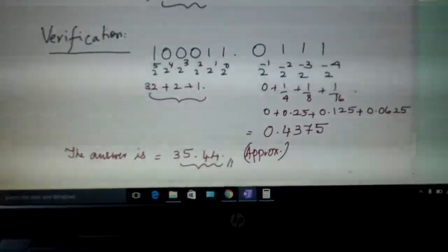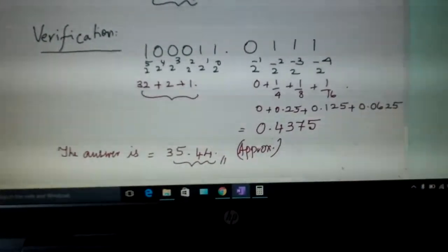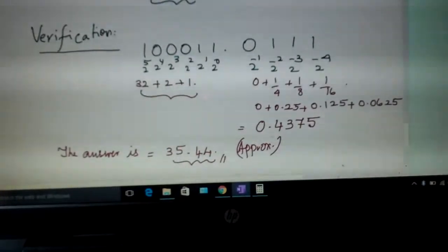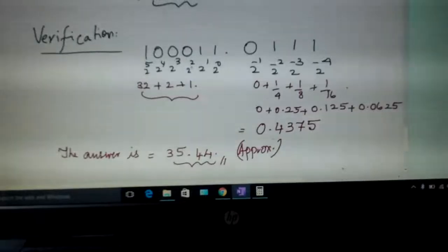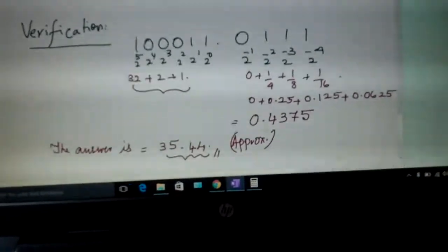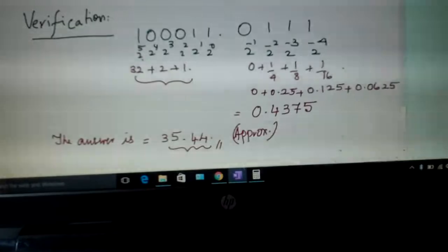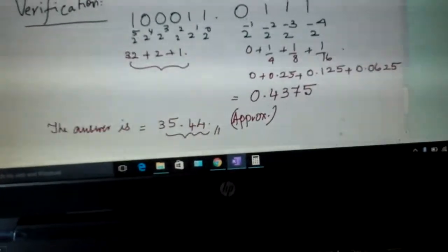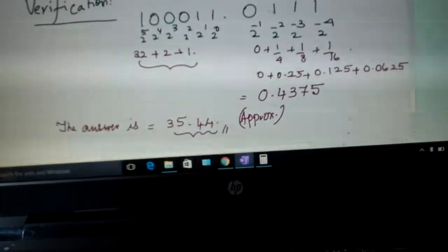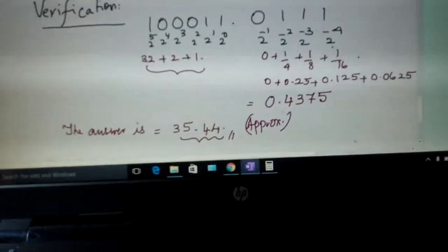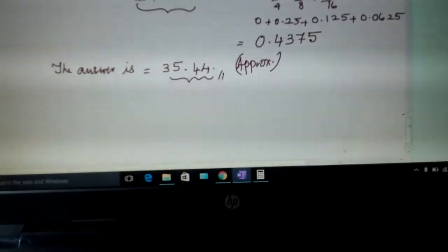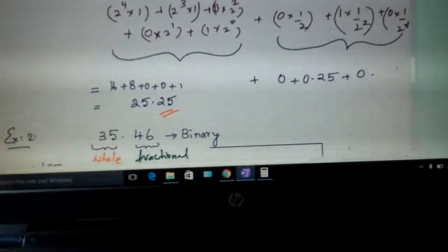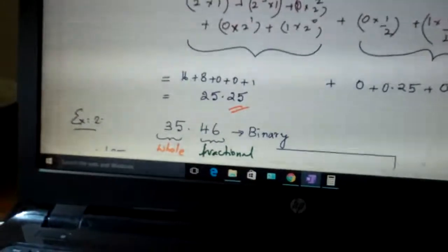And how do you verify this? Write 100011.011. Multiply with this: 0, 1, 2, 3, 4, 5. 5 is also there, earlier it was only up to 4. Now we are taking 2 power 5 also. This is minus 1, minus 2, minus 3, minus 4. After simplification you get something like this. So nearly 35.44. What was given to you was 46. So this is how you will be converting it.